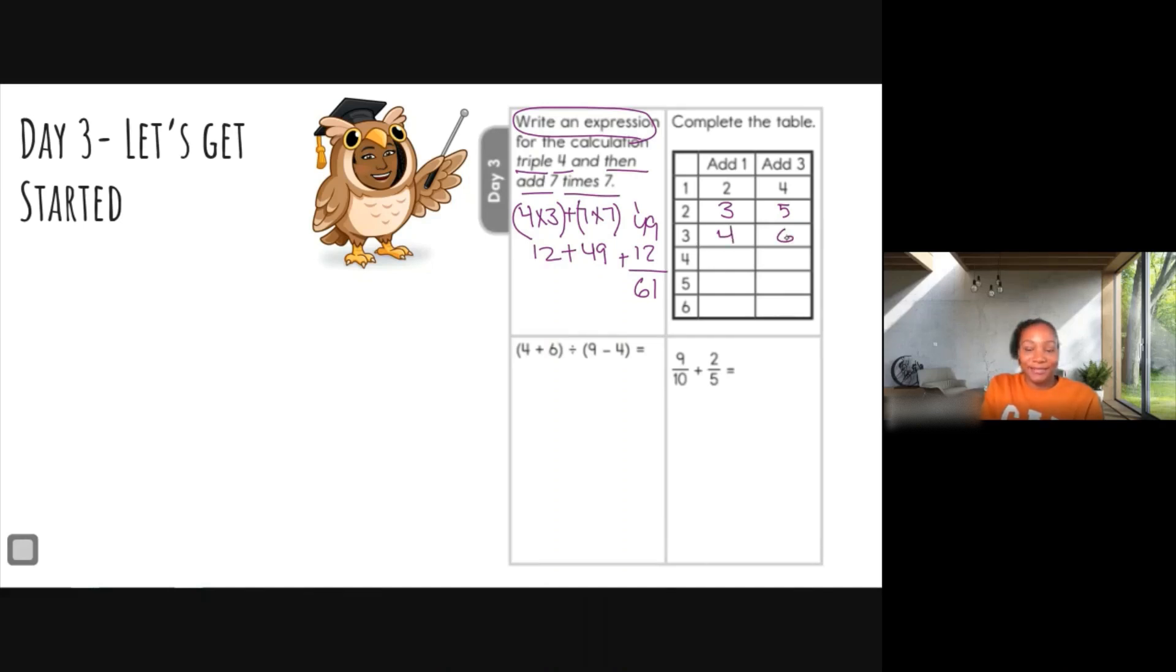Two plus one is three. Two plus three is five. Three plus one is four and three plus three is six. Four plus one is five and four plus three is seven. Are you seeing a pattern here? I am. I see one, two, three, three, four, five. Hmm, I wonder what that number is going to be.